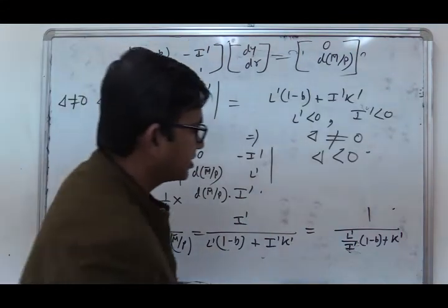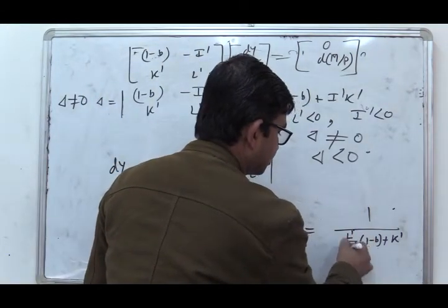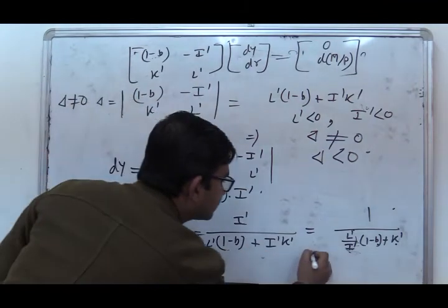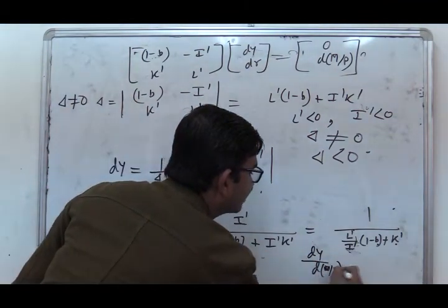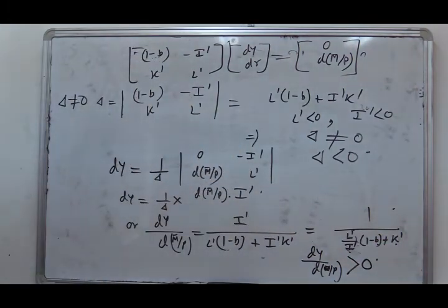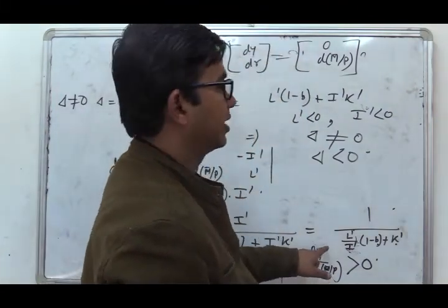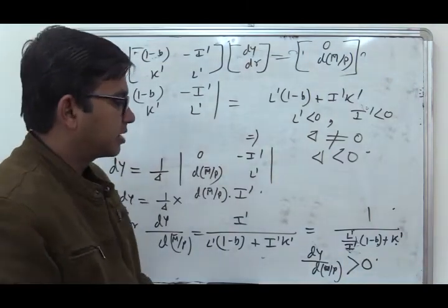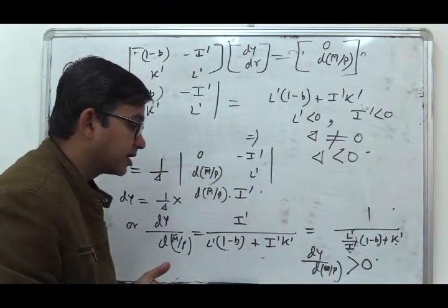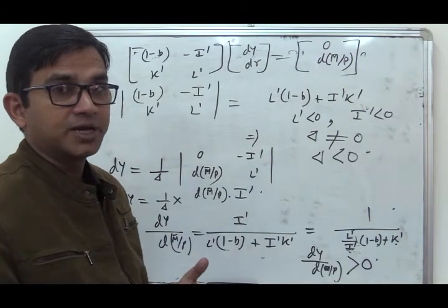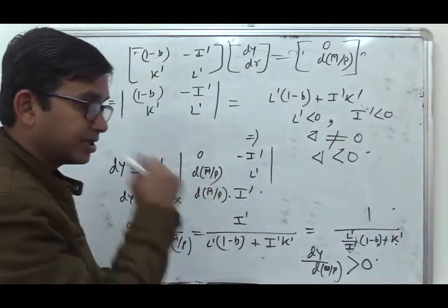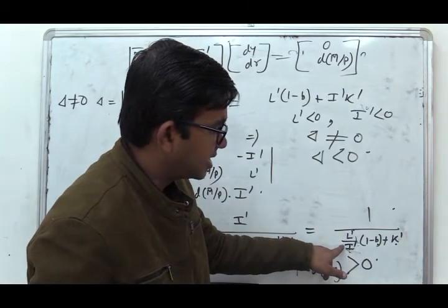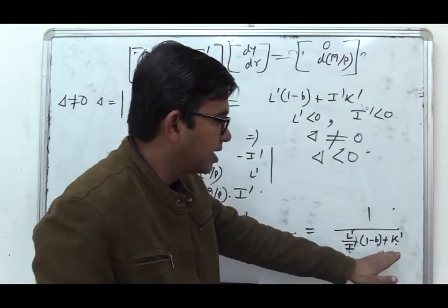Since L' < 0 and I' < 0, their ratio is positive, so DY/d(M̄/P) is positive. This confirms that if money supply increases, it will increase the level of aggregate demand and output. The mechanism is simple: money supply increases → rate of interest falls → private investment rises → aggregate demand increases. The effectiveness of monetary policy depends on two things: L' (interest sensitivity of speculative demand for money) and I' (interest sensitivity of private investment), since K' and P are exogenously given.